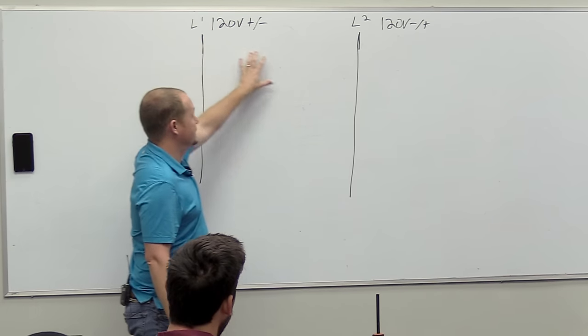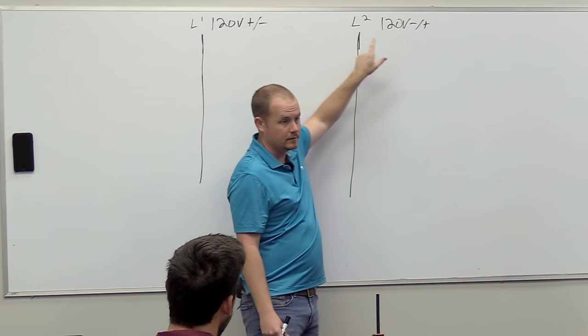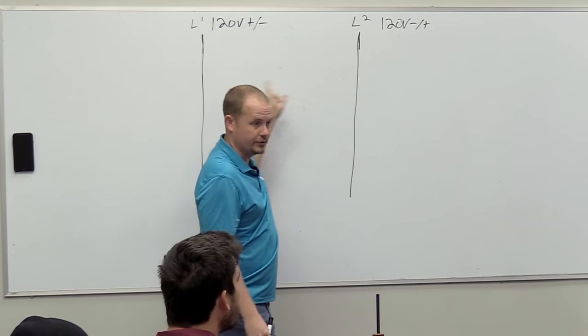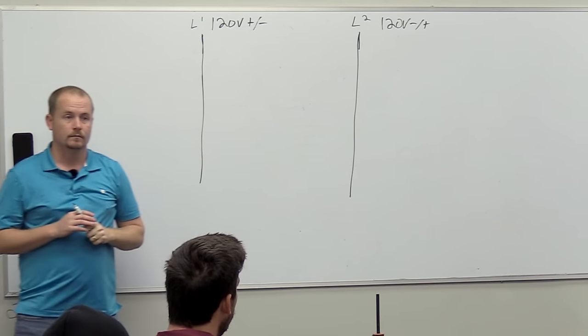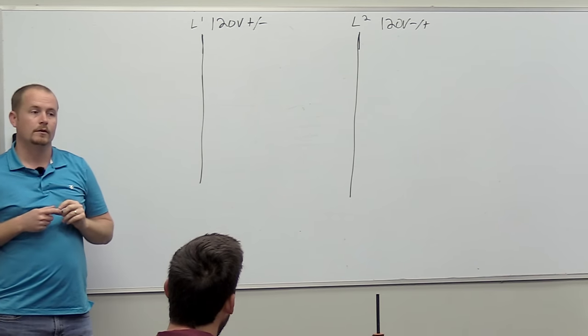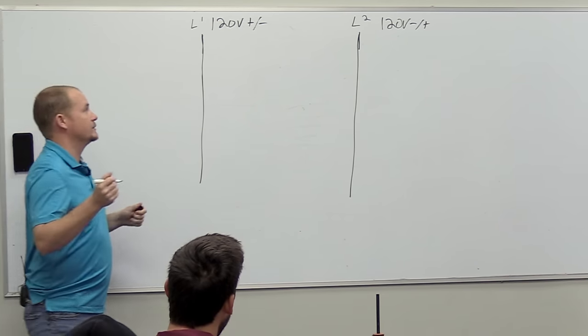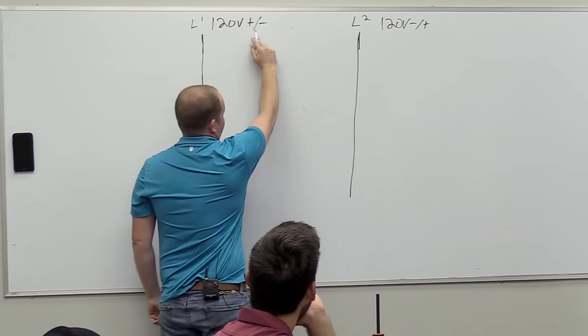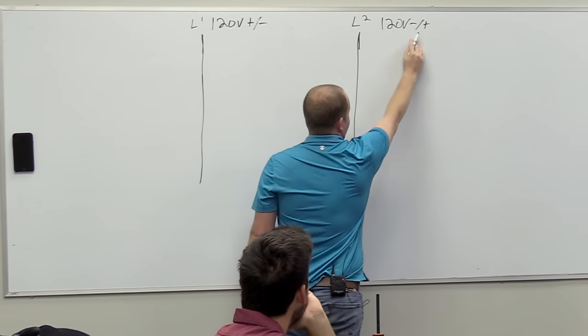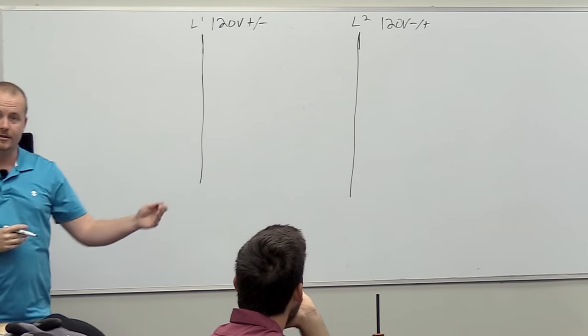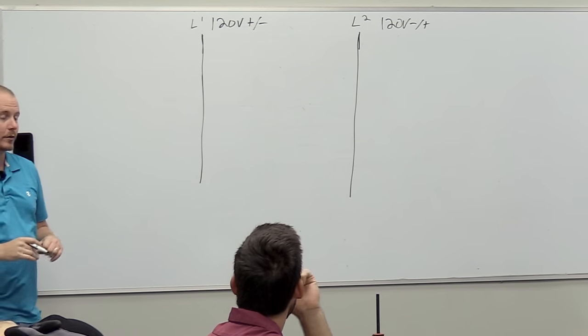Because they're both 120 volts. So why would an electron want to travel in between these two points? So one's positive, one's negative, more of the way it's alternating current. Right, it's alternating current. And that's why I wrote it 120 volts plus slash minus and 120 volts minus slash plus. When the one side's positive, the other side's negative. So it's constantly changing back and forth.